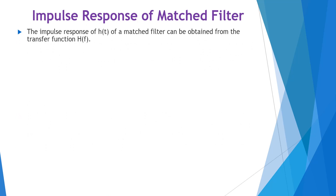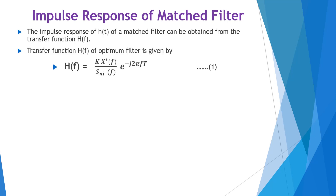Turning towards the impulse response of a match filter: the impulse response h(t) can be obtained from the transfer function H(f). The transfer function of the optimum filter is given by H(f) = k times the complex conjugate of X(f), divided by SNI(f), into e raised to minus j2πft.